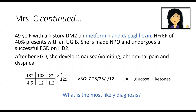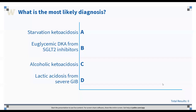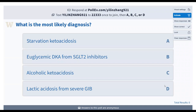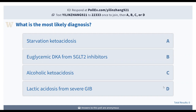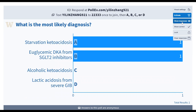Is it starvation ketoacidosis, euglycemic DKA from SGLT2 inhibitors, alcoholic ketoacidosis, or lactic acidosis from severe GI bleed? We have a few votes for both starvation and euglycemic DKA from SGLT2 inhibitors. So let's talk a little bit about SGLT2 inhibitors—this is probably the hottest topic that really impacts outpatient care, and less so inpatient care.